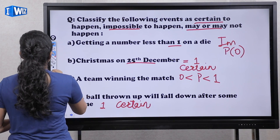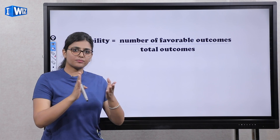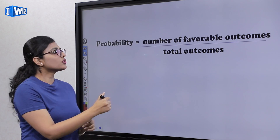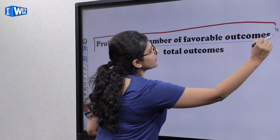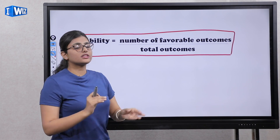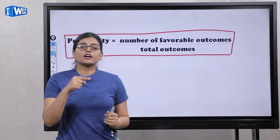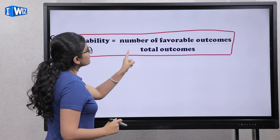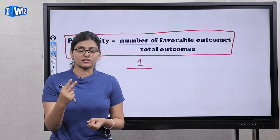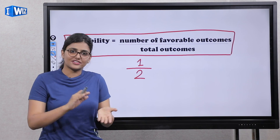Now let's go further into probability. We won't always be told if an event is possible or impossible, so we apply a formula: probability equals number of favorable outcomes divided by total outcomes. Favorable outcomes means what we need. For example, if I toss a coin, either it will be heads or tails. The probability of heads is 1 — there's one favorable outcome — divided by the total outcomes, which is 2. So the probability is 1 by 2, which is half, or a 50-50 chance.